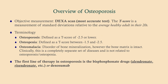The DEXA scan gives you a T-score, which tells you how far you are from the norm. Osteoporosis is a T-score of -2.5 or lower (e.g., -2.8, -3.0). Osteopenia is between -1.5 and -2.5. Osteomalacia is completely different — it is a disorder of bone mineralization where the bone matrix is intact, associated with vitamin D deficiency.